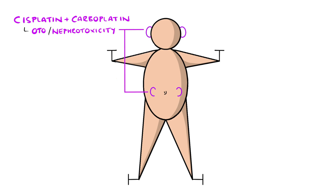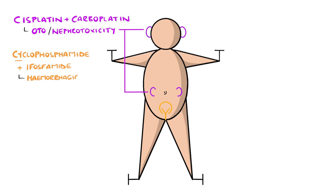Then we add another C, appropriately coloured in yellow with the open side facing down and Y beneath it, to look like a bladder and urethra, to help us remember cyclophosphamide causing hemorrhagic cystitis, as does ifosfamide.